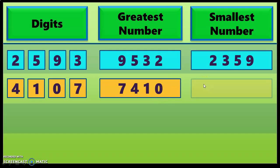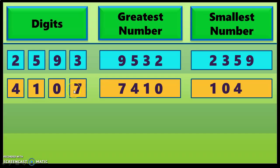Now let us form the smallest four-digit number with these four given digits. Here you have a 0, so as per the rule, we should not write 0 in the thousands place. The number which is bigger than 0 is 1, so we will write 1 in the thousands place and 0 will be moved to the hundreds place. The next bigger number is 4 and the biggest number is 7. So the smallest four-digit number that can be formed using digits 4, 1, 0 and 7 is 1047.